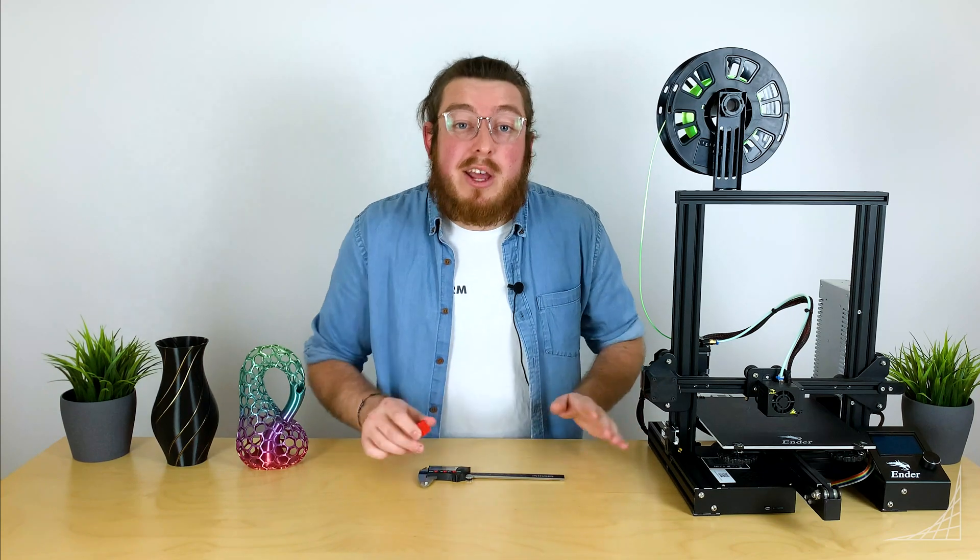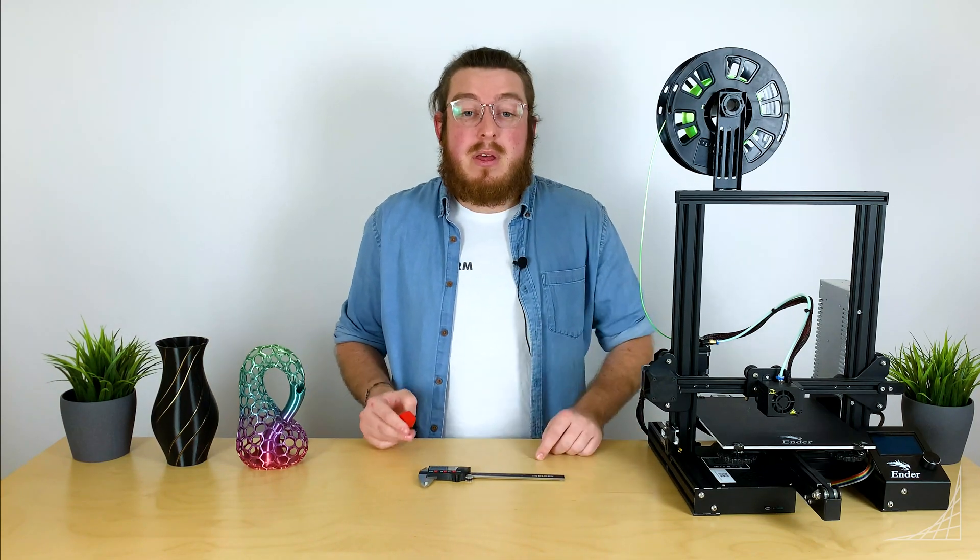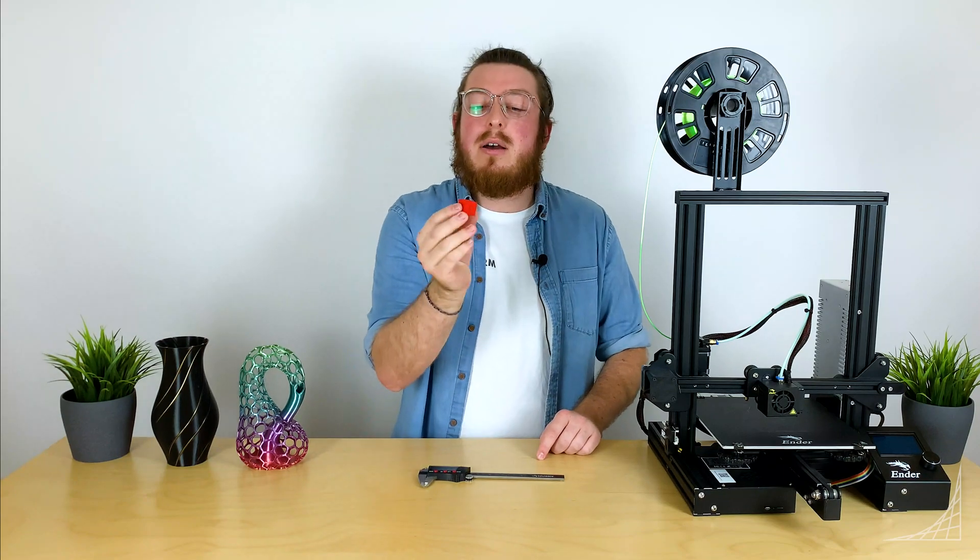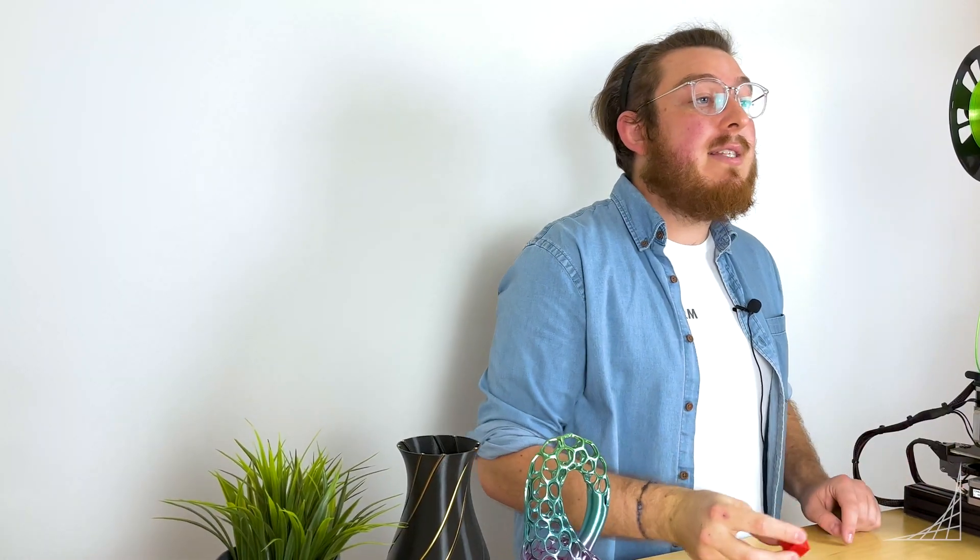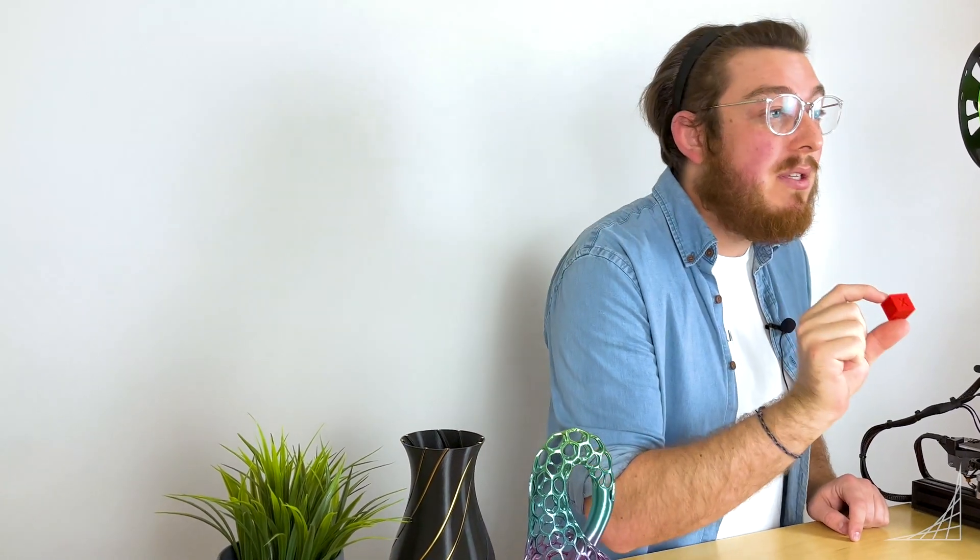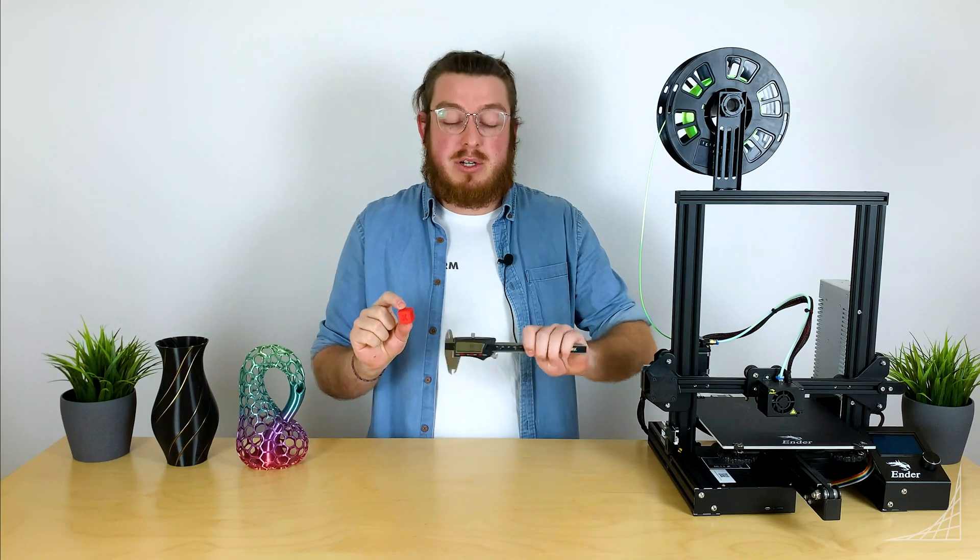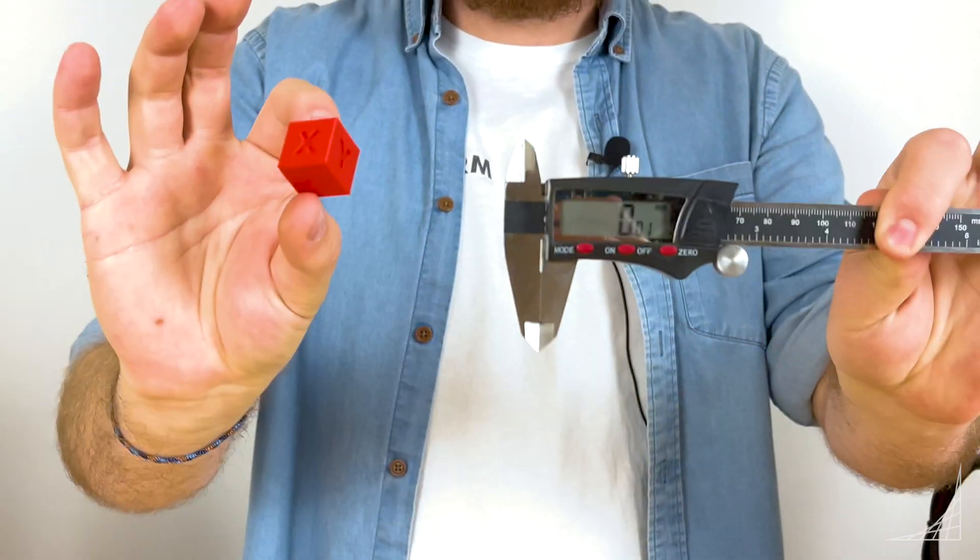So while that's printing, we're going to go over a little bit of the math. The math is very simple, it's actually just a proportional formula. What we're going to do is take our desired dimension, in this case it will be 20 millimeters, and we're going to be dividing that by our measured dimension. This is where our calipers come in.